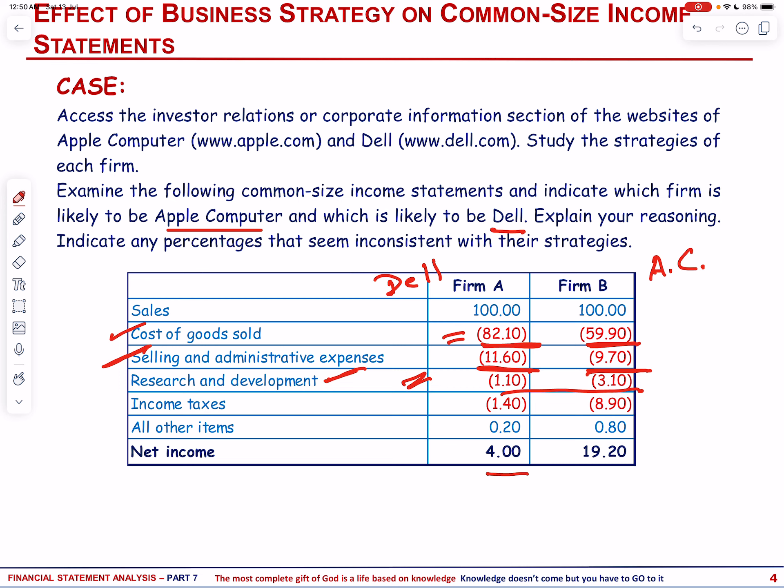Dell operates primarily in the market of PCs, servers, and storage solutions, which typically requires a focus on operational efficiencies and cost-effectiveness. Unlike Apple, Dell's approach to research and development is more centered around enhancing existing products and developing technologies that improve performance and reliability, rather than pioneering groundbreaking innovations. Dell's products often utilize standardized components and emphasize value and customization, which may result in lower research and development expenses as a percentage of sales compared to Apple's more intensive R&D investments.